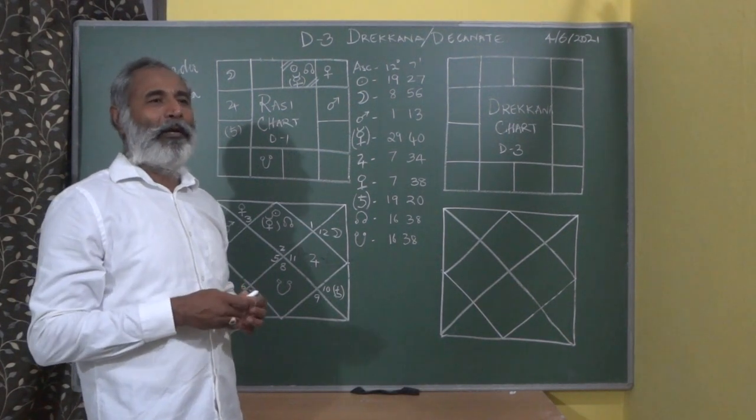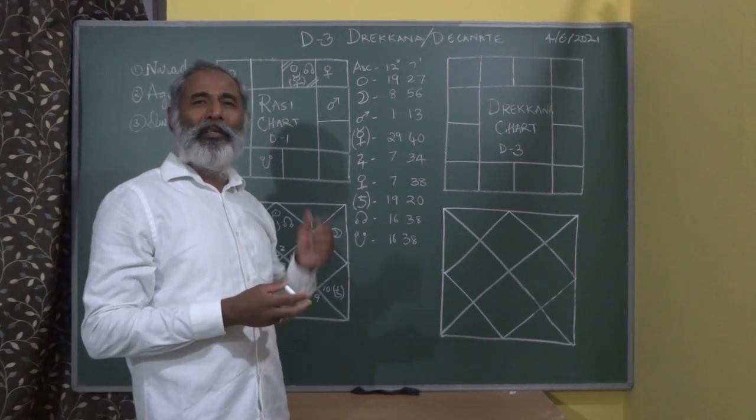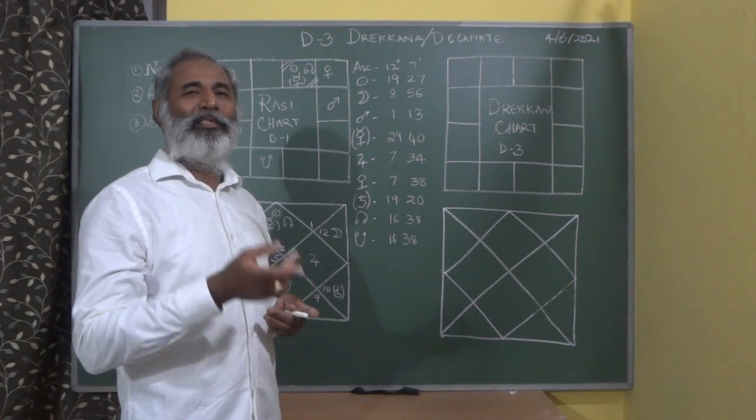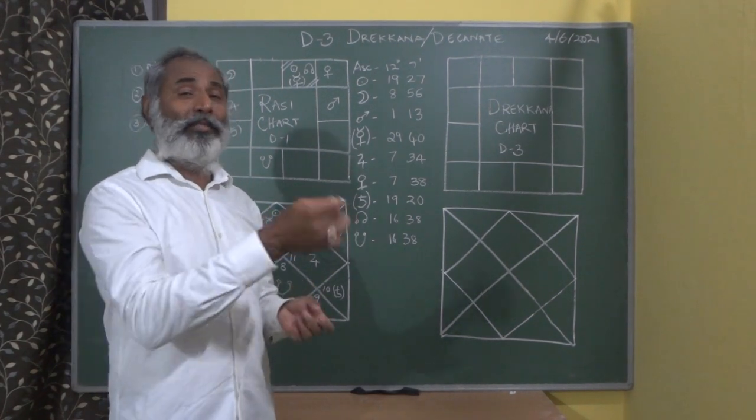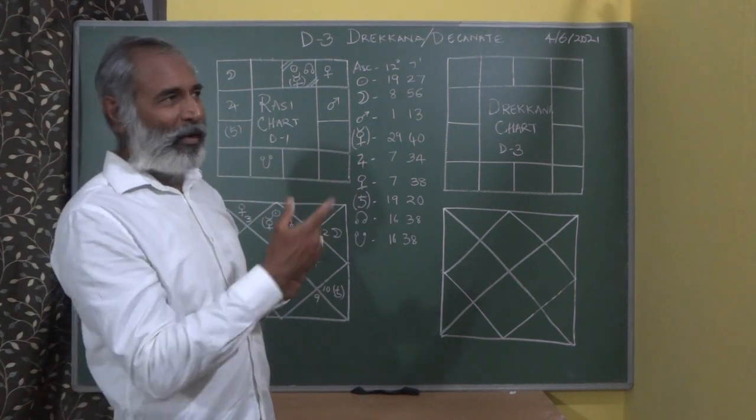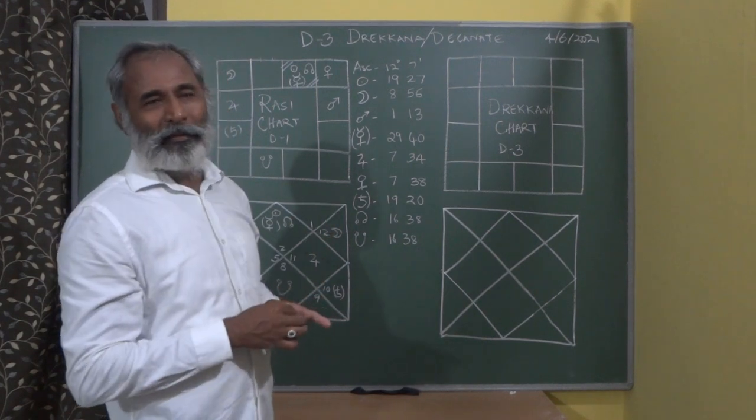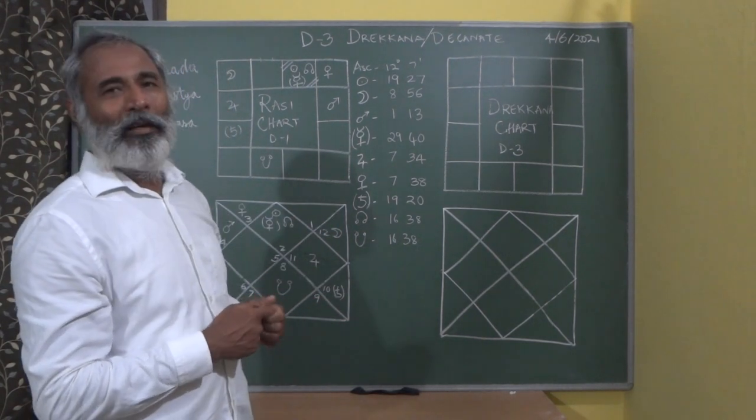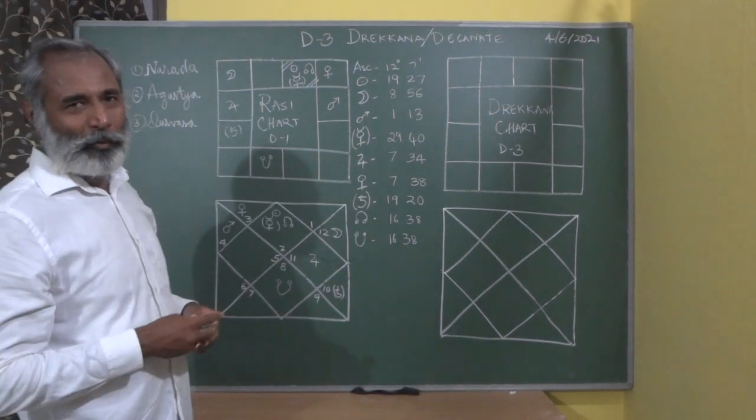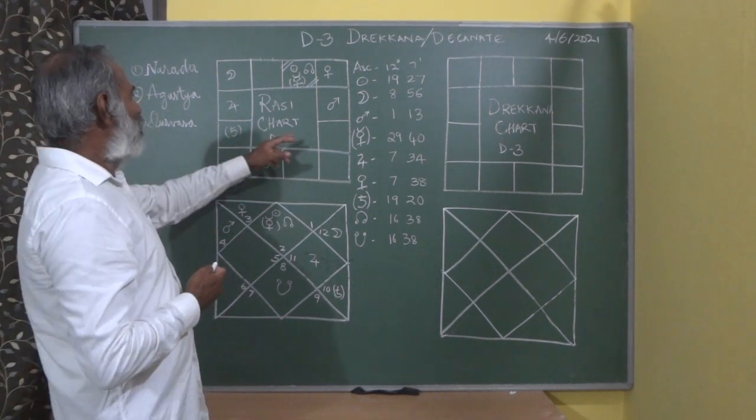If somebody tells you Rutu, that actually means seasons. Rutu here also means six because it represents six seasons. Today there's a little bit of rain - the first monsoon rains have started in South India. There will be that disturbance, but my voice should come through.